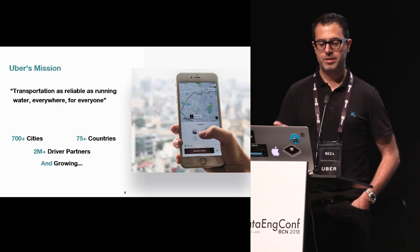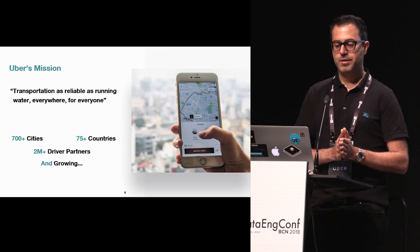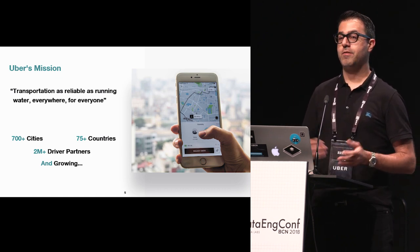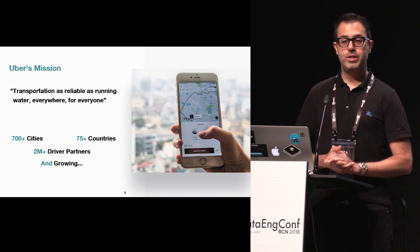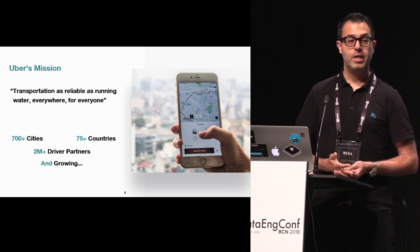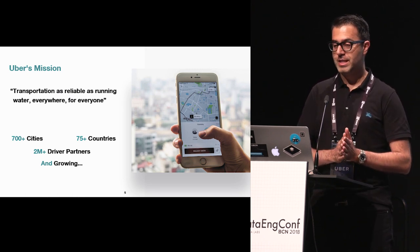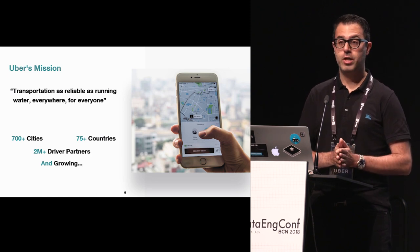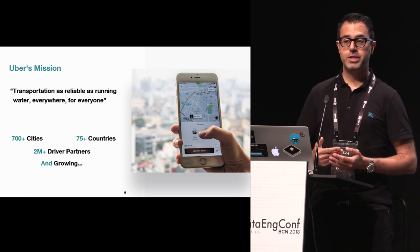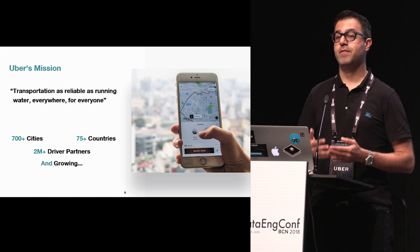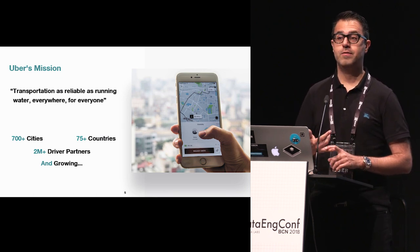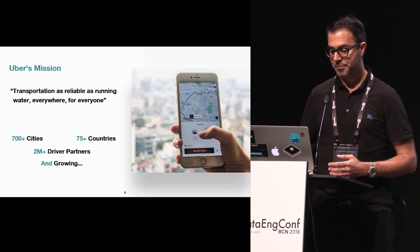Uber's mission is to provide transportation as reliable as running water to everyone, everywhere. To this end, we are operating in over several hundred cities across the world, 75-plus countries, with 2 million-plus driver partners, and we're still growing. On the data side, this means we have a huge amount of data being generated on a daily basis that we have to store and serve to the rest of the company.